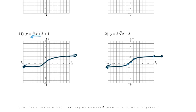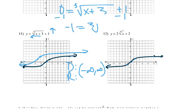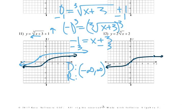So this first one — number 11 — we're going to shift it to the left 3 and up 1. So the middle shifts to the left 3 and up 1. Each point shifts to the left 3 and up 1. Domain and range are both going to go from negative infinity to positive infinity. For the x-intercept, set y = 0: subtract 1, giving −1 = ∛(x+3), then cube both sides — negative 1 cubed is −1 = x + 3, so x = −4. X-intercept is (−4, 0).